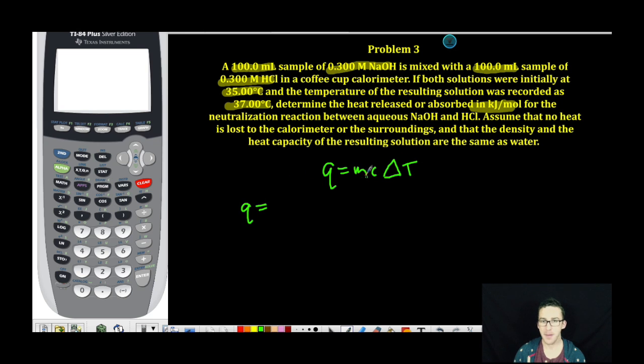The mass. Well, we mixed 100 milliliters of sodium hydroxide and 100 milliliters of HCl for a total of 200 milliliters. Now, because we are assuming that the density of the resulting solution is the same as water, which is one gram per milliliter, if I have 200 total milliliters, I have 200 grams as the mass of my resulting solution.